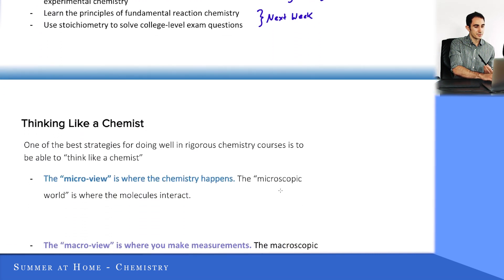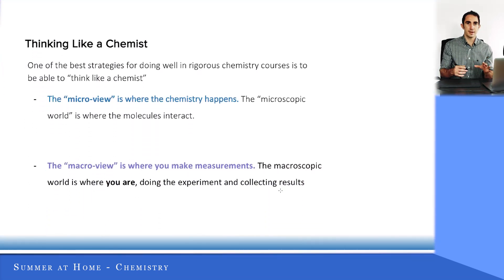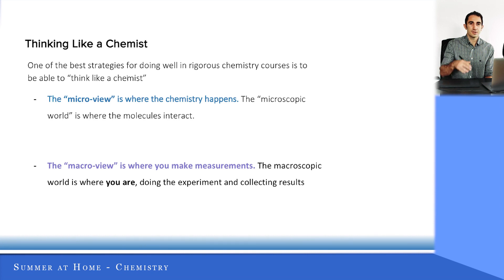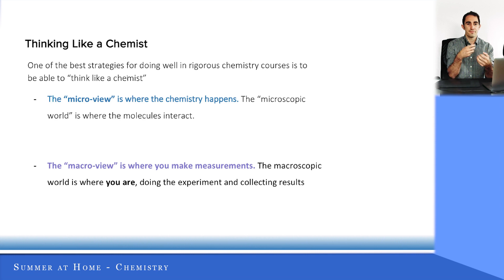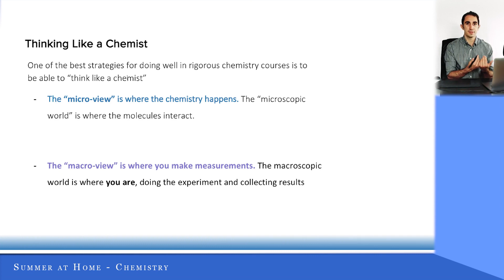Let's jump right into it. I'm going to begin by talking about that overall objective: thinking like a chemist. You're going to hear this statement over and over again in introductory chemistry. It is simply the ability to transition between the micro view, which is where the chemistry happens — where those atoms and molecules are vibrating, interacting, bonds are breaking, bonds are forming — and it really is the explanation for the measurements that we make.